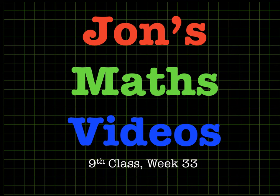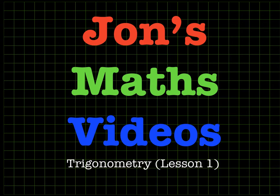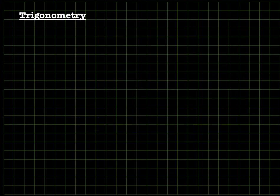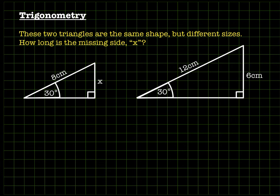Here's the week 33 lesson for ninth class about trigonometry — it's lesson one in trigonometry. Let's look at these two triangles: they're the same shape but different sizes. They're both right-angled triangles with 30 degree angles, so the shape is the same for both but one is bigger than the other.